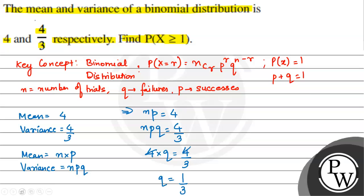Now the value of Q is known. Since P plus Q is equal to 1, P equals 1 minus Q, which gives 1 minus 1 by 3 equals 2 by 3. So now the value of P is also known. Now let us find the value of N — we know Q and we know P.